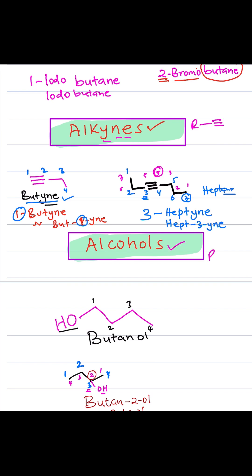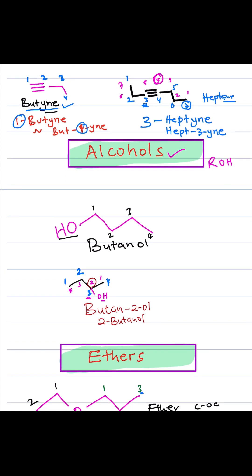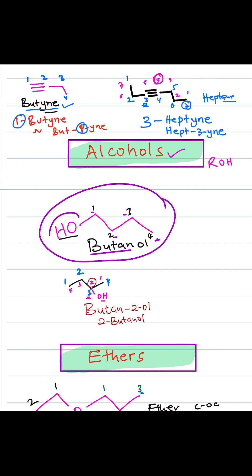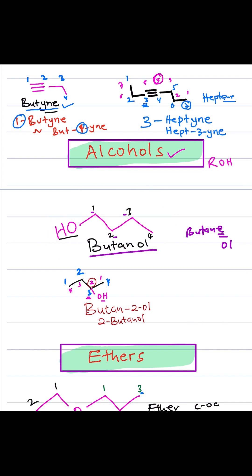Next, alcohols have an OH group. In this example, it has carbon 1, 2, 3, and 4, so it has 4 carbons, and the name becomes butane. Because it's an alcohol with OH, you change the E and replace it with OL, so the name becomes butanol. Because the OH is on position number 1, we could say 1-butanol, or butan-1-ol.